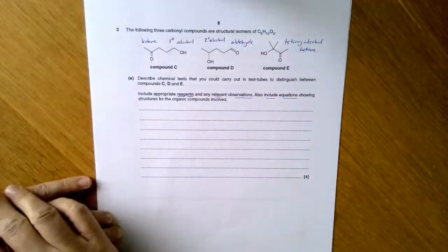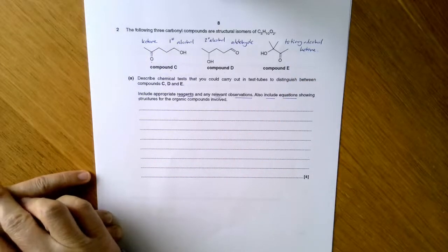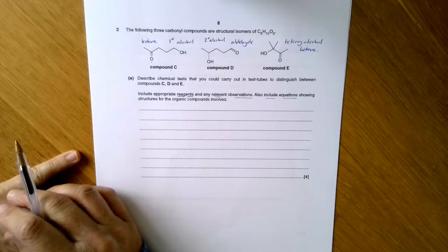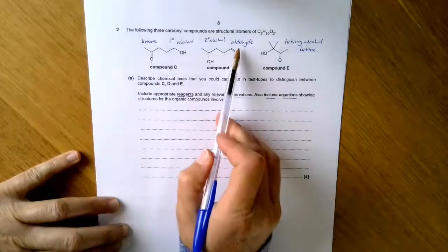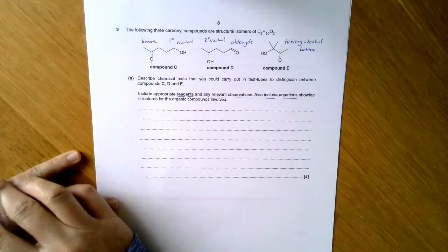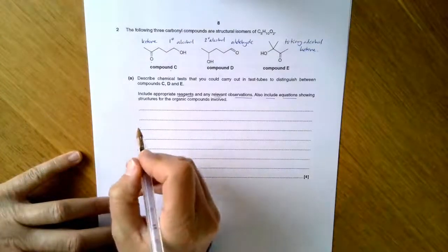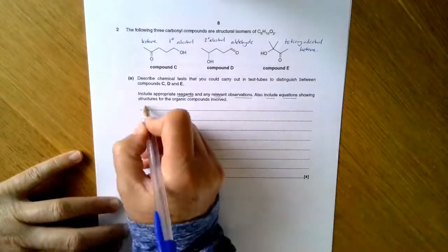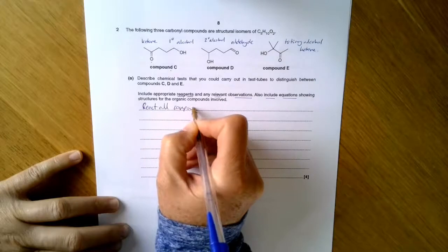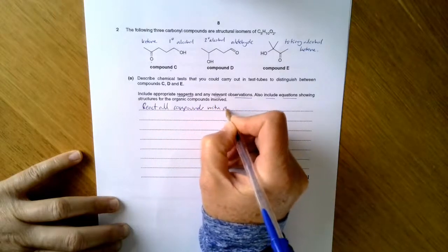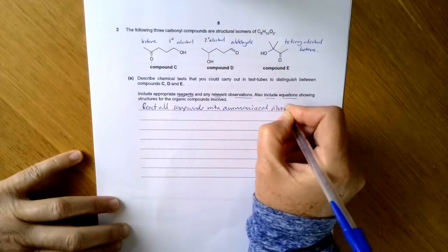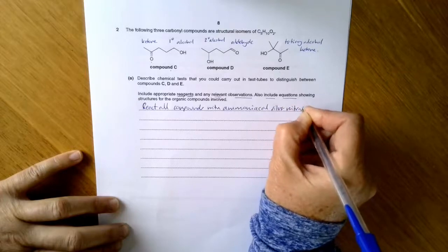So I want to distinguish between them, which means I separate them out. It doesn't mean I've got to test for every single functional group, it just means I've got to identify them. So I would be looking for a difference and I think the thing that would strike me first is that compound D is an aldehyde and the other two are ketones. And I know how to distinguish an aldehyde and a ketone. I can do the ammoniacal silver nitrate test. So I would react all the compounds with ammoniacal silver nitrate. This used to be called Tollens but ammoniacal silver nitrate is the up-to-date name. So that's the name that I want you to use.